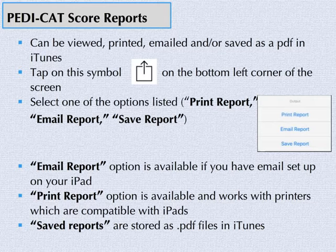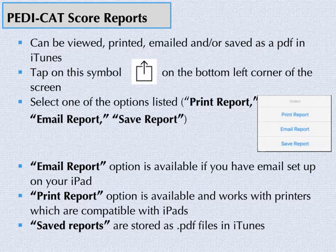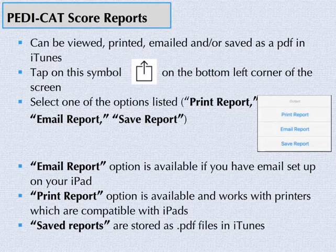In addition to viewing a score report, they can be printed, emailed, and/or saved as a PDF file in iTunes. To print, email, or save the score report, tap on the symbol on the bottom left corner of the iPad screen. Next, you will see a pop-up. Select the appropriate option: Print Report, Email Report, or Save Report. The Email Report option is only available if you have email set up on your iPad. The Print Report option is available for printers which are compatible with iPads. Saved reports are stored as PDF files in iTunes.